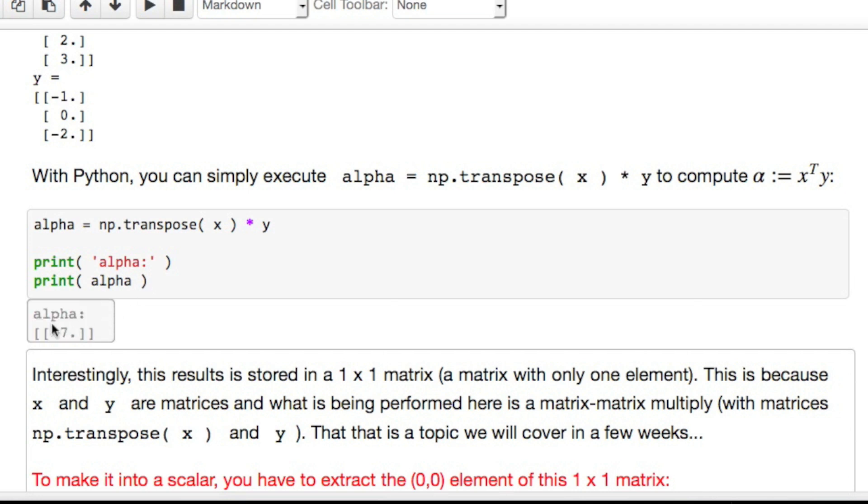However, it's very important to notice that alpha here is returned as a one-by-one matrix, as opposed to a scalar. Why is this? Because x and y each are created as matrices. When you do x transpose times y, that's really matrix-matrix multiplication. Later in the course, you're going to learn that the result of a matrix-matrix multiplication is a matrix. Now, it turns out that a one-by-one matrix is the same as a scalar, but NumPy doesn't know about that, and therefore it returns it as a matrix.